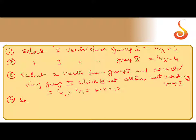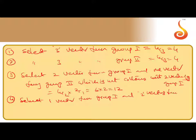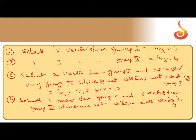Case 4 is the reverse: select one vector from Group 1 and two vectors from Group 2 which are not collinear with the vector in Group 1. This is possible in 2C1 × 4C2 ways, giving the same answer of 12.